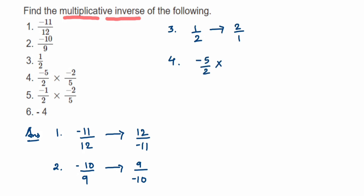For the fourth one, we have (-5/2) multiplied by (-2/5). We are finding the multiplicative inverse of this whole expression. You can cancel 5 and 5, and 2 and 2. Minus times minus is plus, so we get the answer +1. The multiplicative inverse of 1 is 1 itself, so it remains 1/1.